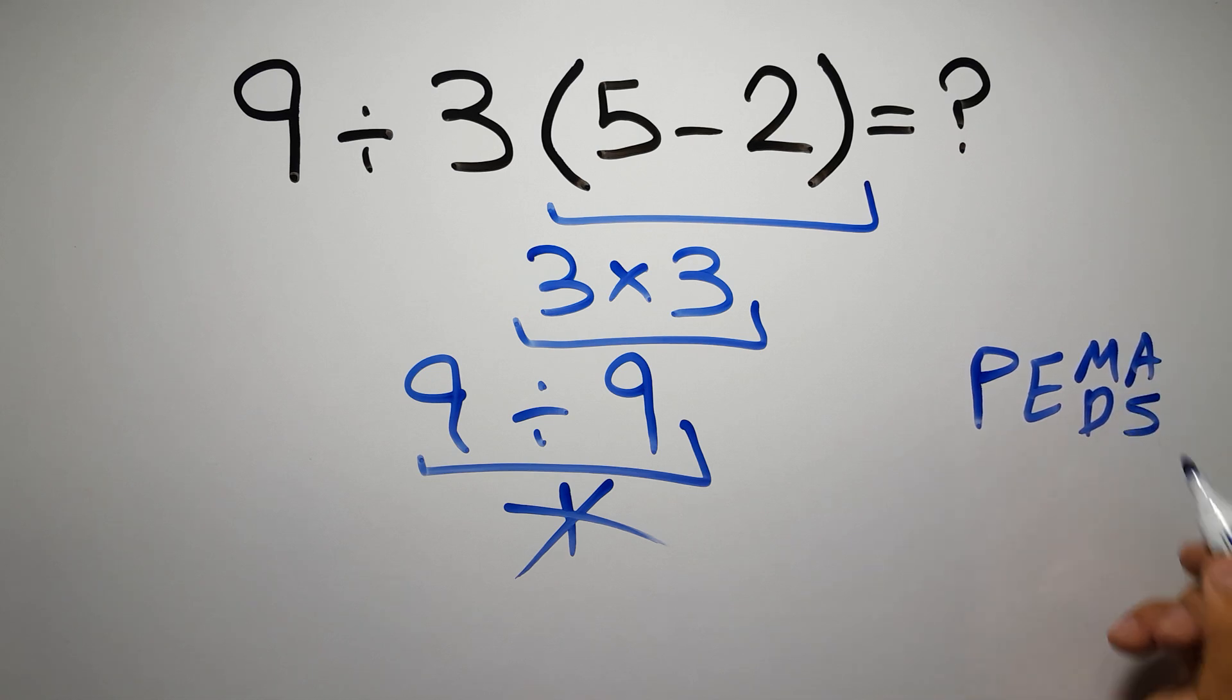And finally addition or subtraction. Remember that multiplication and division have equal priority, and we have to go from left to right, and the same applies to addition and subtraction.